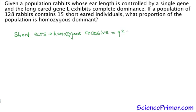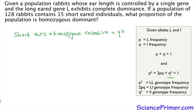So we have q squared, which is the genotype frequency of the homozygous recessives. We know there's 15 of them. So if 15 of 128 are homozygous recessive, that proportion of the population is 0.117. So we know q squared equals 0.117.